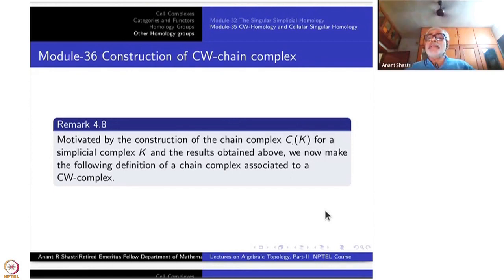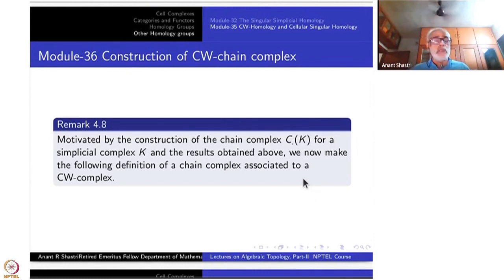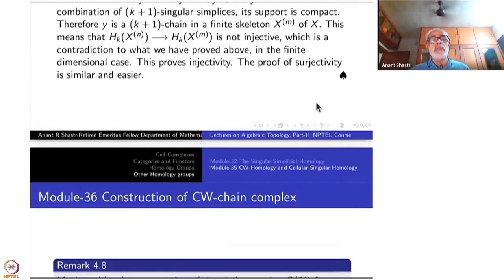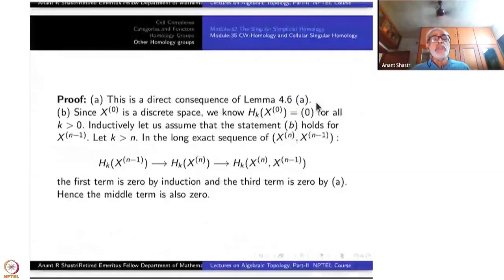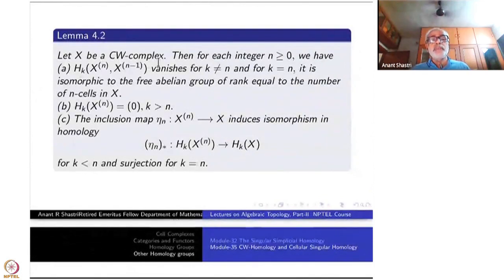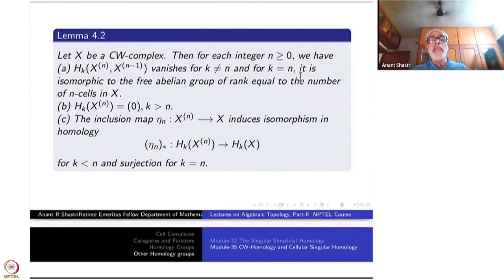We would like to construct the CW chain complex of a CW complex. Let me recall what we did last time - the last lemma is very crucial for this construction. X is a CW complex and for each N positive, the kth homology of XN relative to XN-1 vanishes for k not equal to N, and at k equal to N it is isomorphic to the free abelian group of rank equal to the number of N-cells in X.